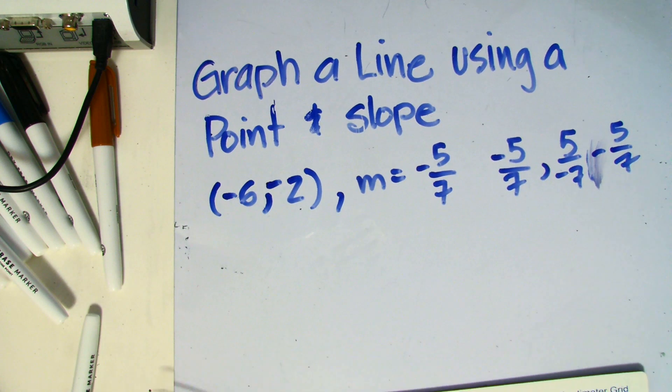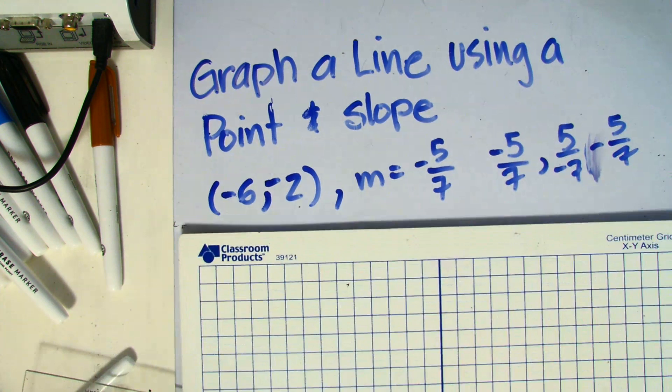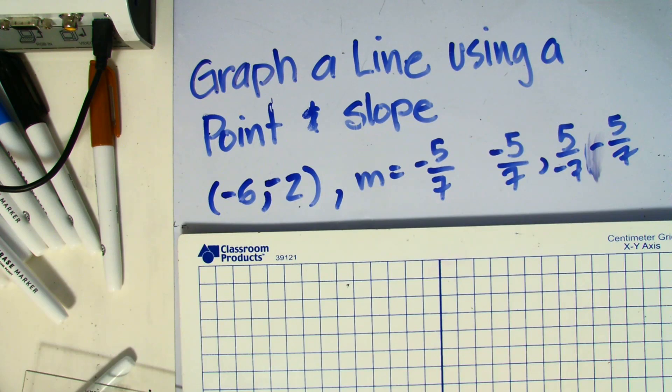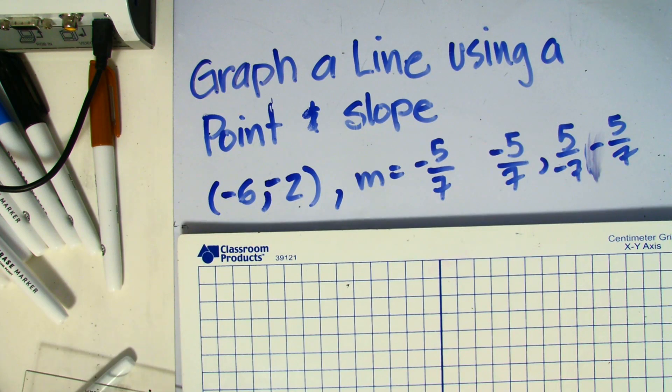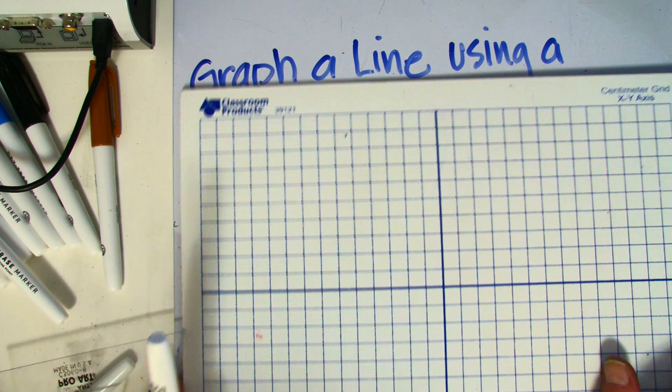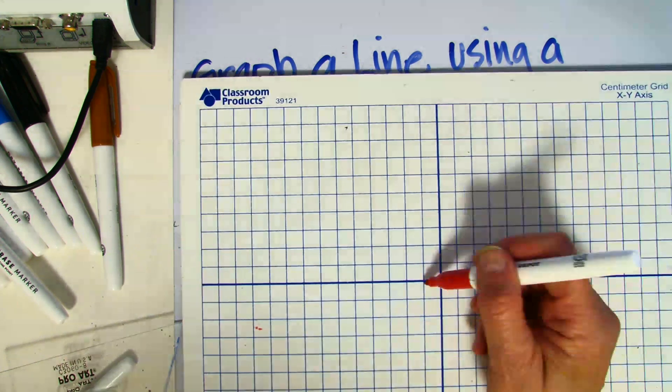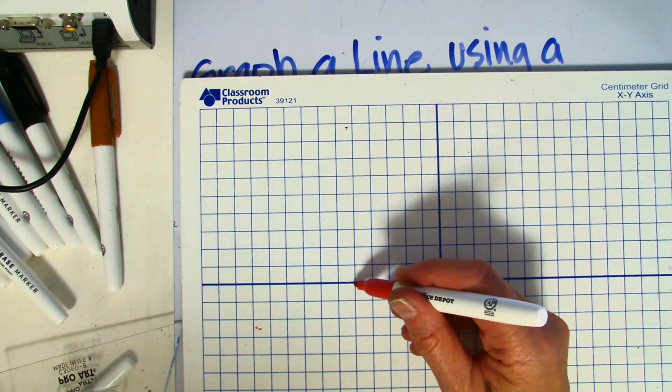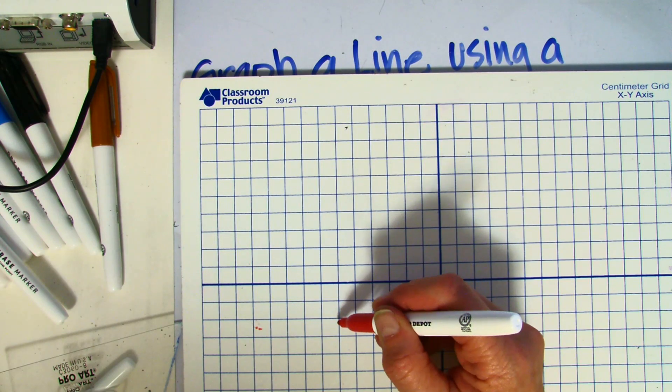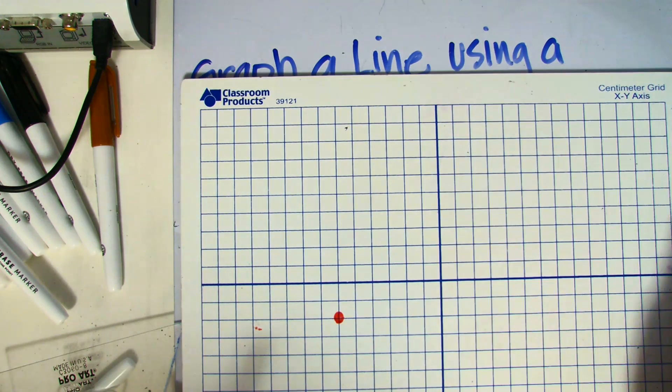So let's plot our point. Negative 6 is going to be our x. So we're going to go to the left 6, and then down 2. So 1, 2, 3, 4, 5, 6, and down 2. That's our point.